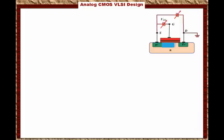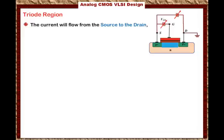Once the channel is created, the transistor will conduct similar to the NMOS transistor, with two regions: the triode region and the saturation region. In the triode region, current flows from the source to the drain because the source has higher voltage, and VDS must be non-zero — the source voltage must be higher than the drain voltage. As shown in the diagram, with VGS more negative, we apply a voltage such that the source voltage is greater than the drain voltage, and positive charges flow from source to drain.